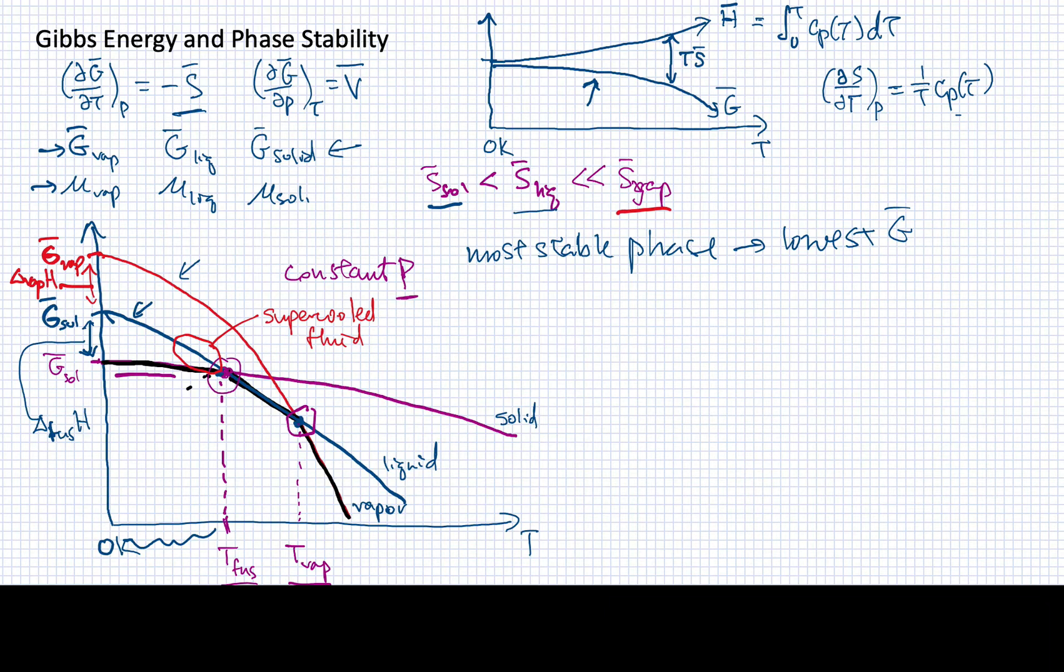Any minor perturbation is going to send it into the solid phase, but we do see that occasionally sometimes. We can also see super-heated fluids and super-heated solids, but those are also extremely rare. So mostly we're going to be on this thick black line that goes through these two points.